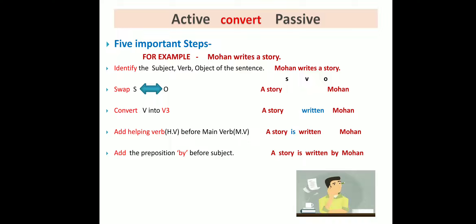The second step: swap the subject and object positions. So we change the positions of 'a story' and 'Mohan.' Third step: convert the verb into its third form or past participle — 'write' changes to 'written.' The fourth step: add a helping verb before the main verb. Since this sentence is in simple present tense, 'is' is added here.